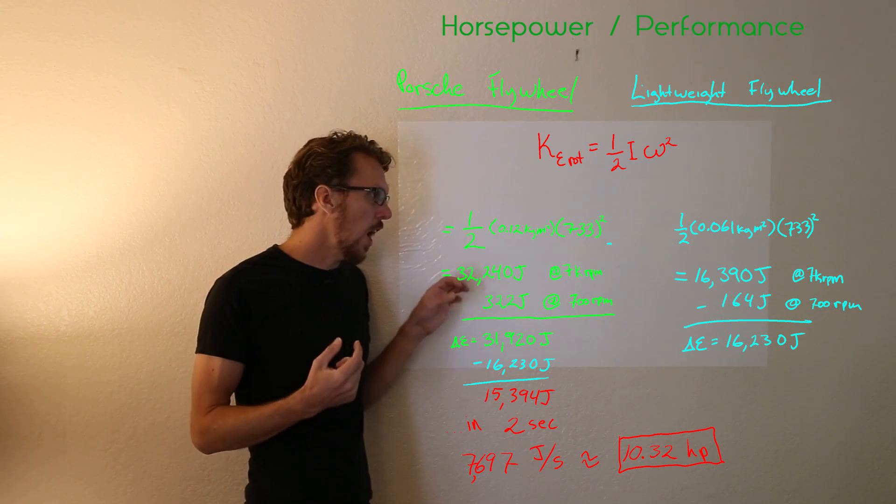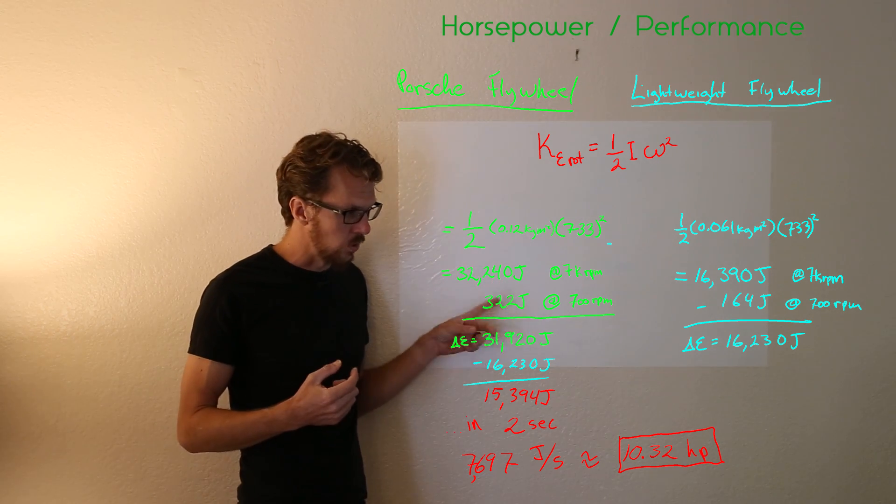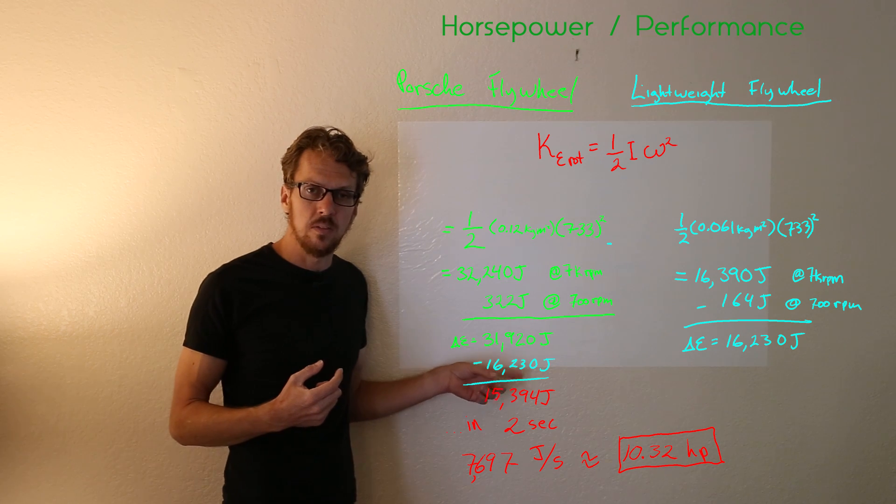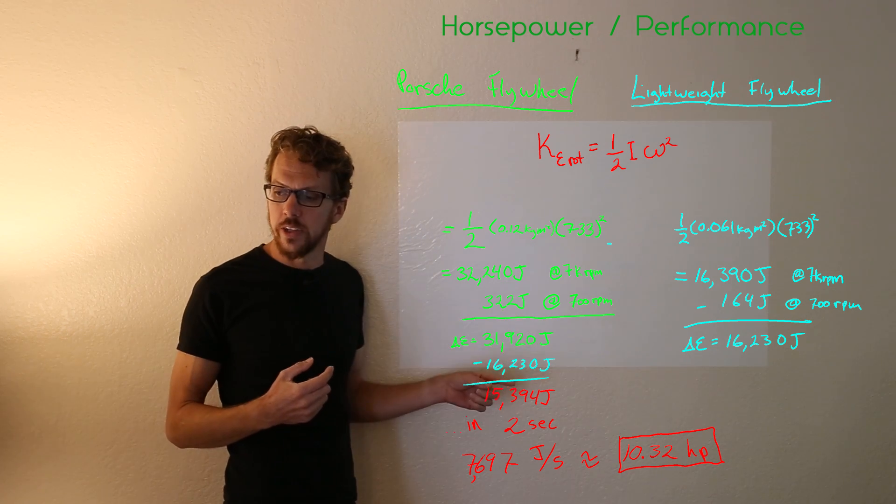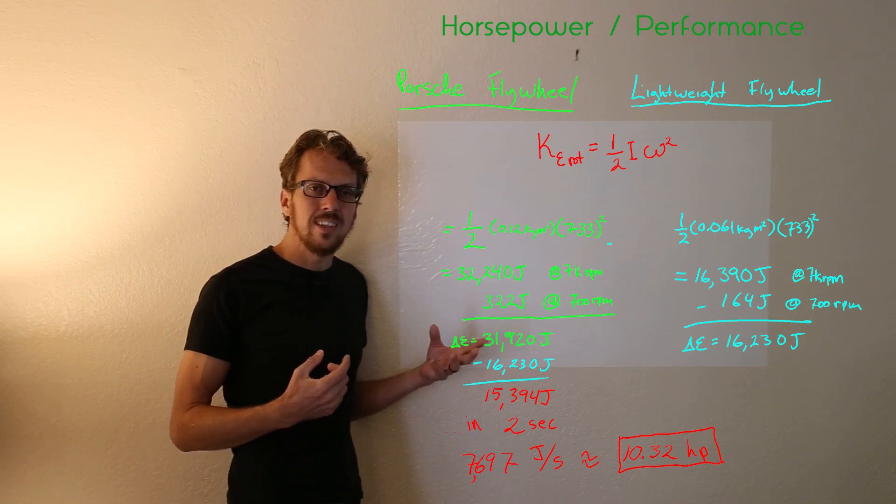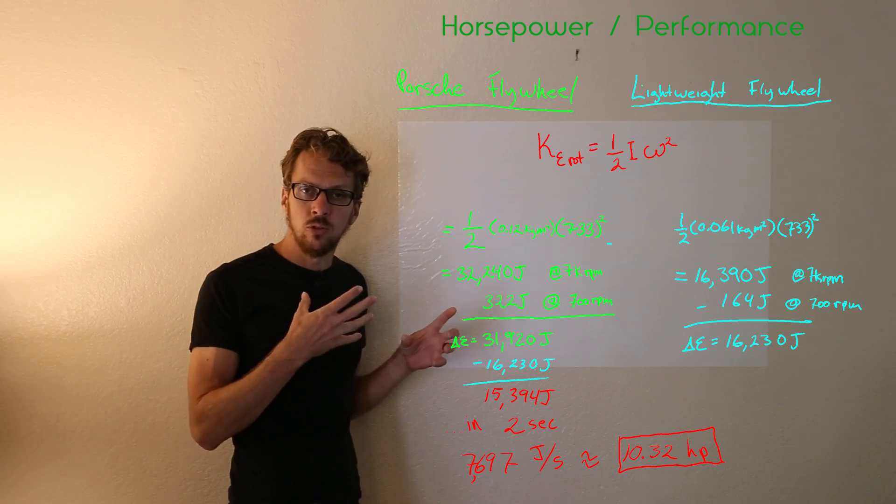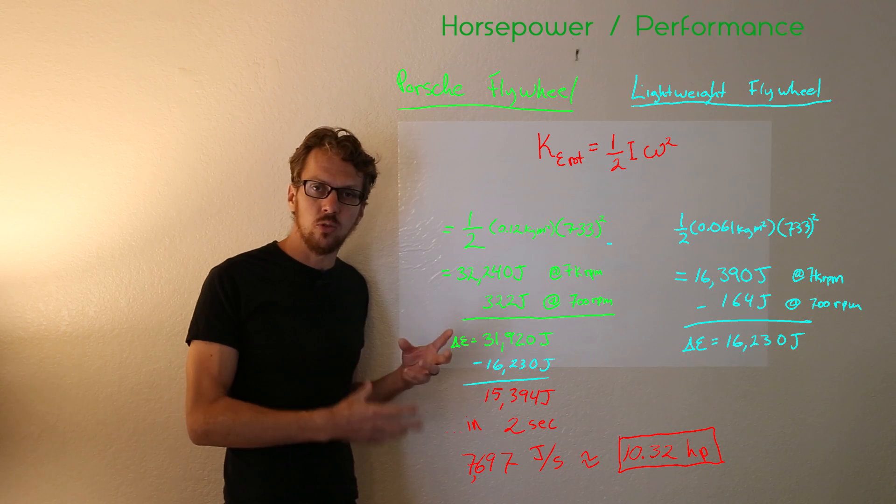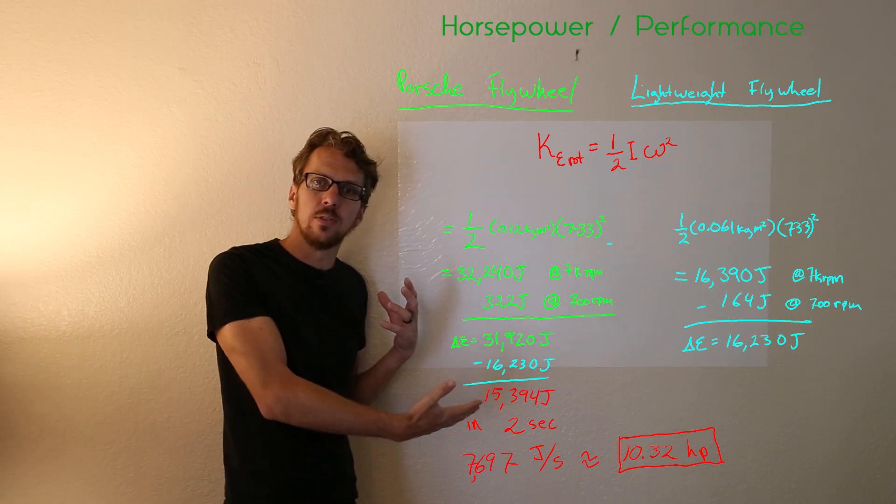So when we subtract the amount of energy that it takes for the Porsche flywheel to spin at 7000 RPM from the amount of energy that it takes for the lightened flywheel to spin at 7000 RPM, we see that it takes about 15,000 joules of extra energy to spin up the heavier flywheel.